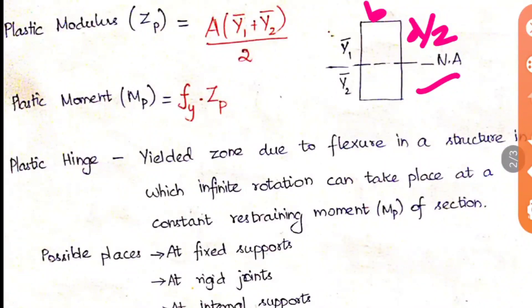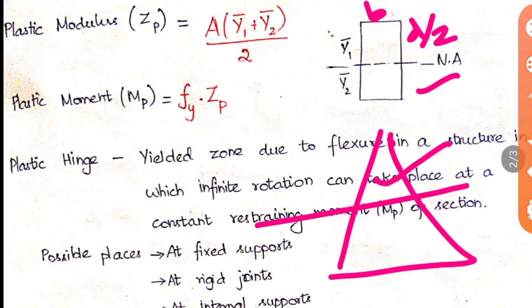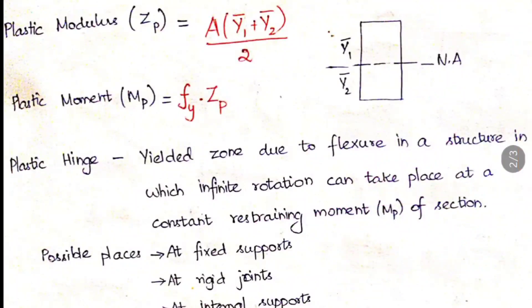For a rectangular section the plastic section modulus ZP is BD²/4. For triangular or circular sections it is more tedious because the neutral axis differs — for a triangle, the above part is triangular but the lower part is trapezoidal. You have to calculate accordingly for different sections. The plastic modulus ZP is thus obtained. The second term is the plastic moment MP, which is FY × ZP — stress times plastic modulus.